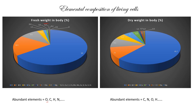Let us look at the elemental composition of living cells. In elemental composition, we can look at fresh weight or dry weight. In fresh weight, the most abundant element is oxygen, then carbon, then hydrogen, then nitrogen and so on. In dry weight, the most abundant element is carbon, then nitrogen, then oxygen and hydrogen. So there is a difference in fresh weight and dry weight composition.